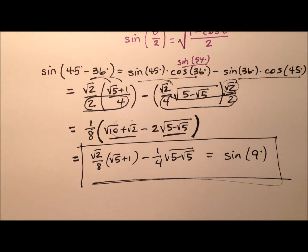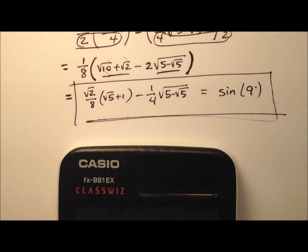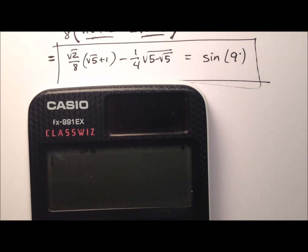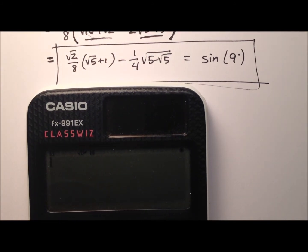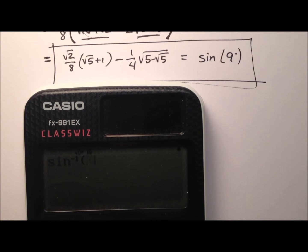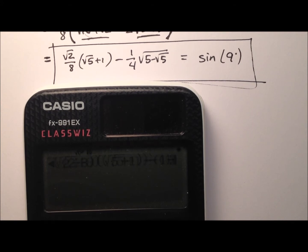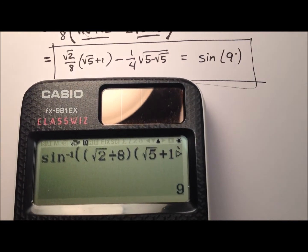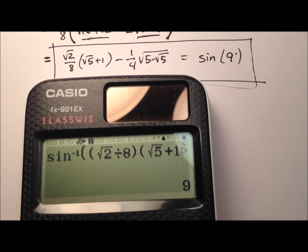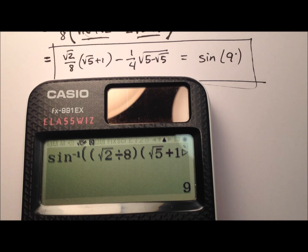Let's go ahead and grab a calculator and verify that that works. So inverse sine of — we've got a lot of stuff here. The square root of 2 over 8, so we take the square root of 2 and divide that by 8, and then multiply that by the square root of 5 plus 1. And from that we subtract 1/4 times the square root of 5 minus the square root of 5 inside. Equals — it is 9 degrees. So we know that this one works as the sine of 9 degrees.